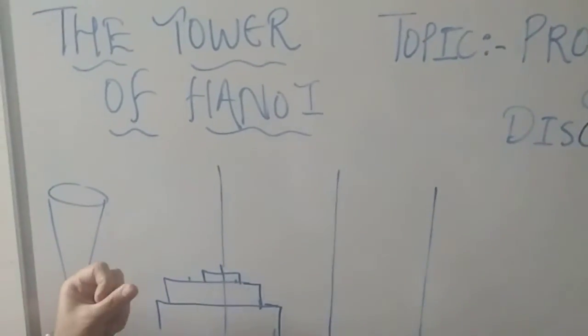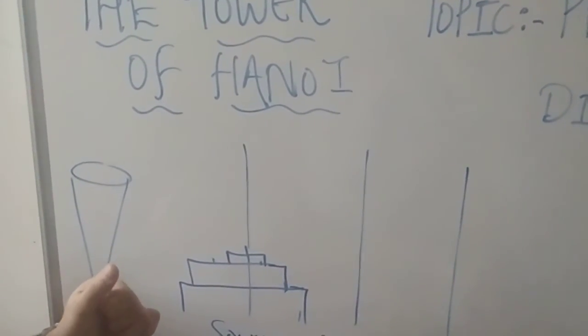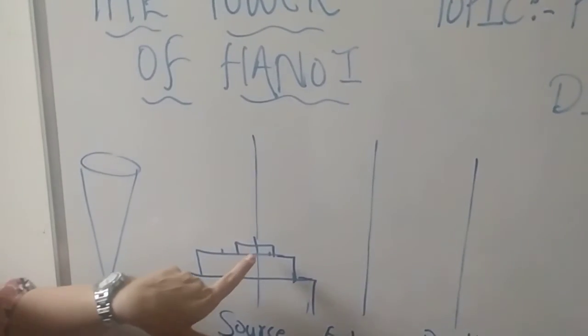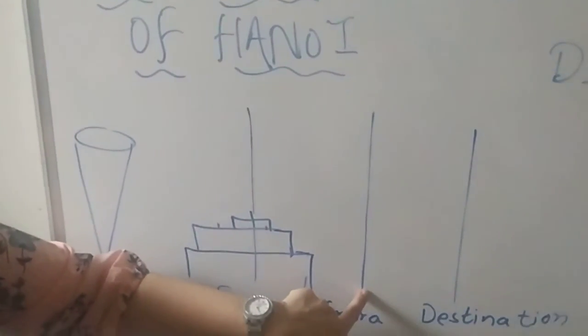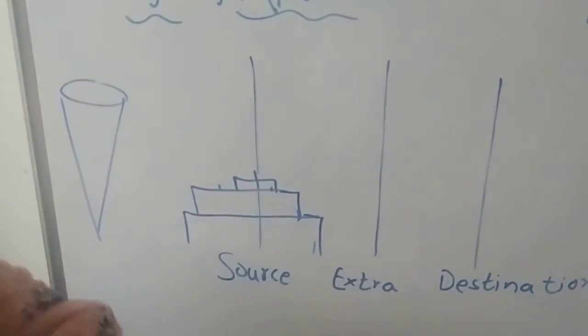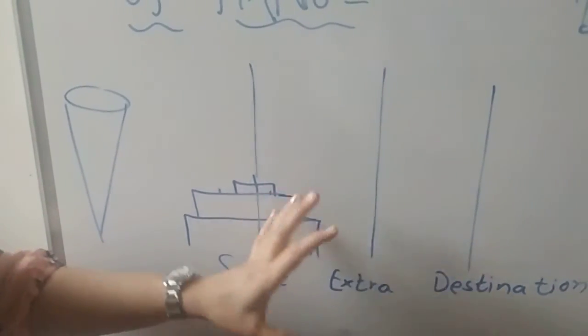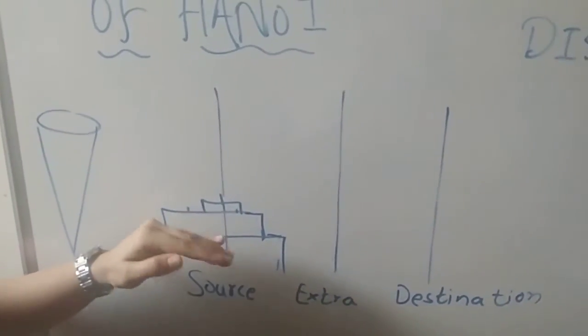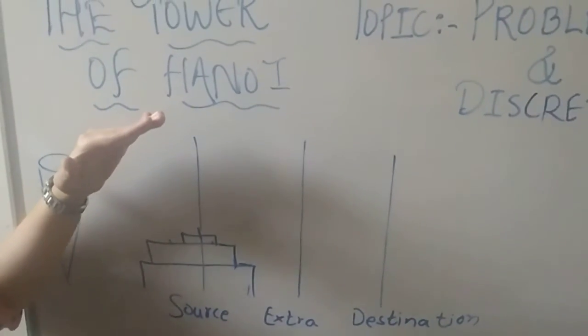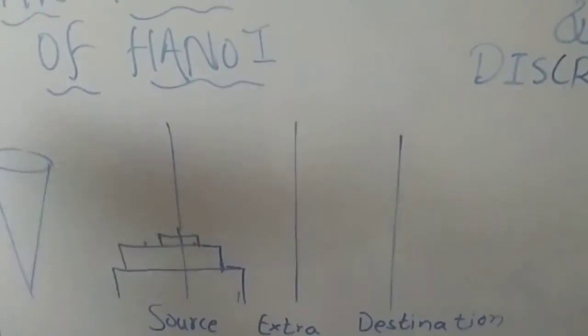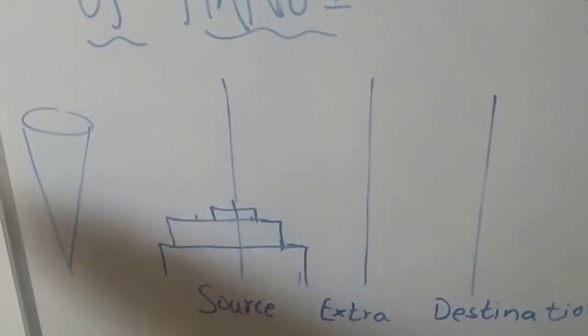Now we will solve. And third rule is, no disc may be placed on top of smaller disc. Means if you put a small disc here and then you try to move the second disc, it can't be moved. You have to keep a sequence in the ascending order. Ascending order means smaller to bigger, not bigger to smaller.